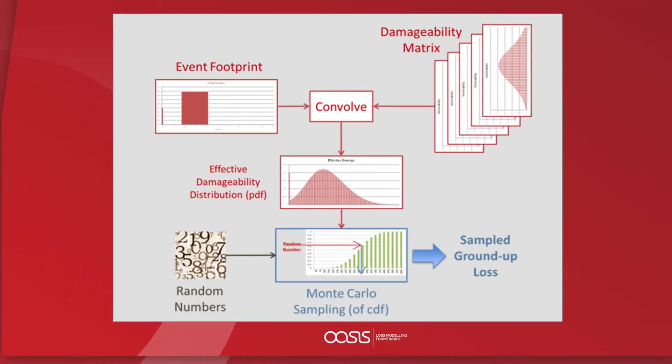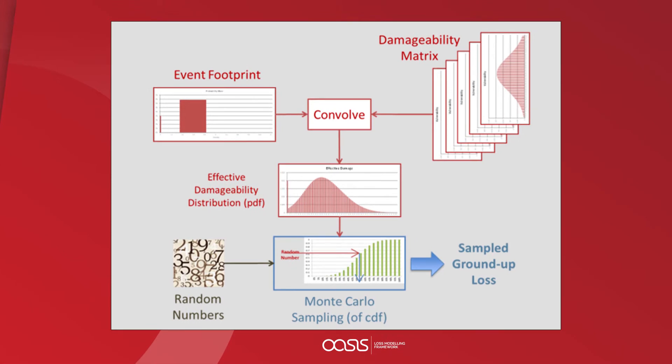That brings us to the first calculation: damageability. When we talk about damage, we're mostly referring to the economic loss as a proportion of the value of something, like a house — damage factors of 10%, 20% relative to its total value. In the calculation, we combine the hazard and vulnerability uncertainty into one distribution called the effective damage distribution, which represents the overall likelihood of different levels of loss for an event and a property.